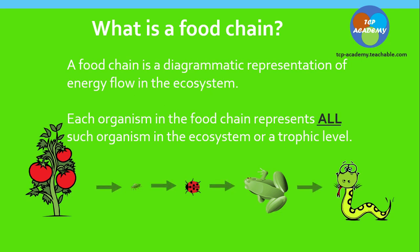Each organism in the food chain also represents what is called a trophic level. If we look at the food chain on screen, we can count the number of trophic levels. Here we have one, two, three, four, five trophic levels.